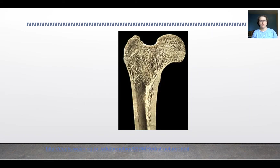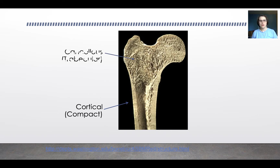This is a micrograph of a cross-section of the femur, and it nicely illustrates the two different kinds of bone in the human body. Down here in the shaft of the long bone, we have cortical or compact bone — sometimes called hard bone. Up here at the proximal end of the bone, we have the cancellous, or trabecular, or sometimes called spongy bone, which has a very different, more mesh-like structure than compact bone.